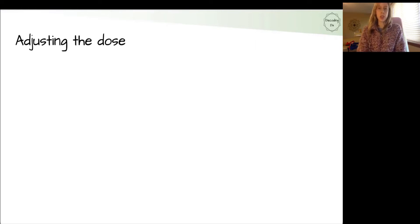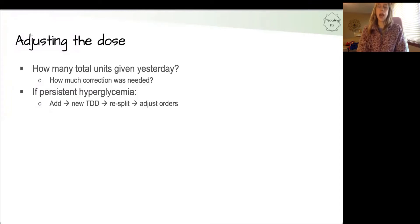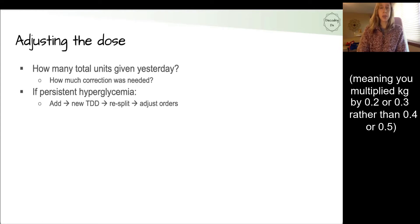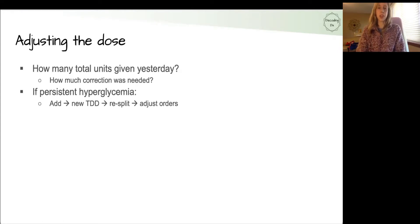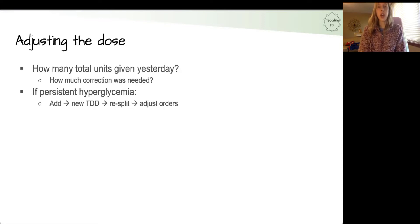We're going to pick up where we left off and start with how do you adjust the dose. You picked your starting dose on admission — how do you figure out what to do from there? One thing to look at during pre-rounds in the morning: how many total units of insulin did that patient get yesterday? We're really asking how much correction was needed, or did they have hypoglycemic episodes suggesting you gave too much? If you erred on the side of lower dosing to be safer, you might see some hyperglycemia in the point-of-care glucose measurements. If they had persistent hyperglycemia — all glucoses a little high all day — you can add together all the units of insulin they got yesterday, regardless of whether it was long-acting or short-acting, and consider that their new total daily dose, including the correction units used to control blood glucose.